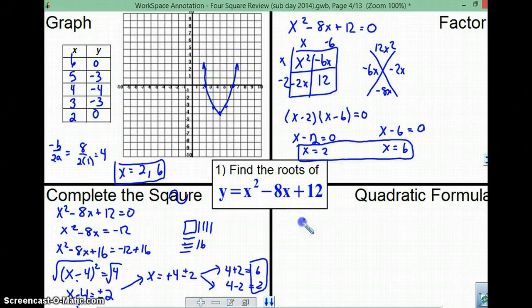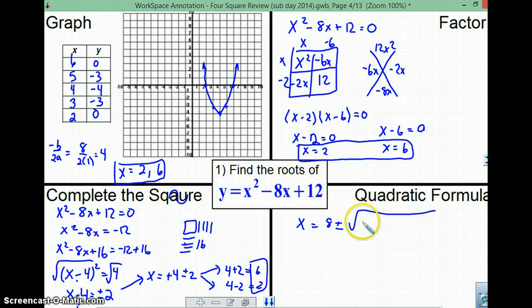Let's find it by quadratic formula. x equals negative b. What's negative b? 8. Plus or minus the square root of b squared. That's 64. Minus 4 times a. What's a? Just 1. Times c, which is 12. All over 2 times 1.